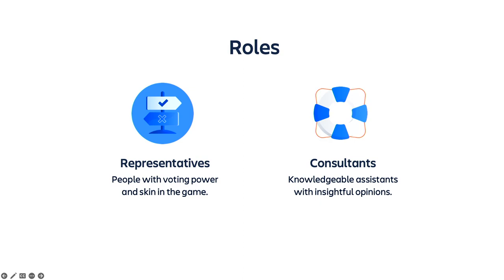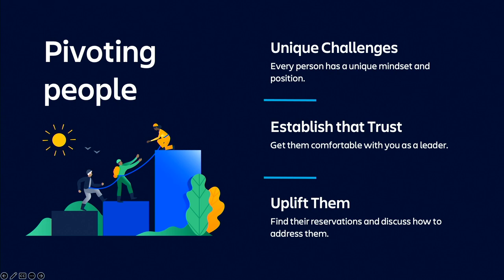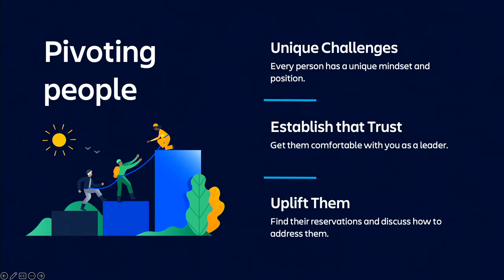Once you know what everybody is expected to do, you can start talking about pivoting those people. Every person you interact with is a unique perspective with a unique history. As a coach or community leader, I try to consider each one a unique challenge — how to uplift them to be an effective representative. You start with lots of one-on-ones to establish trust, and that trust has to be bi-directional. Ask them: why are they interested, what are they passionate about, what do they want to change, what are their reservations, what challenges and obstacles are ahead.